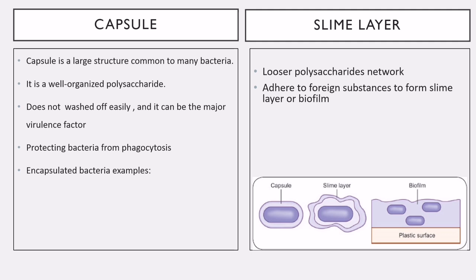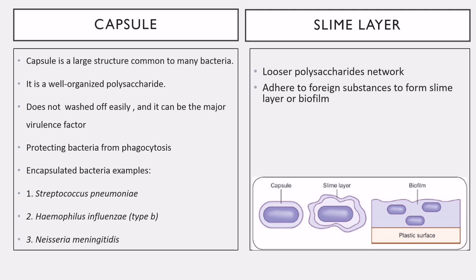Some examples of encapsulated bacteria include Klebsiella, E. coli, and many others. Some for which vaccines are available include Streptococcus pneumoniae, Haemophilus influenzae type B, and Neisseria meningitidis. Pseudomonas is an example of a slime layer-producing bacterium.